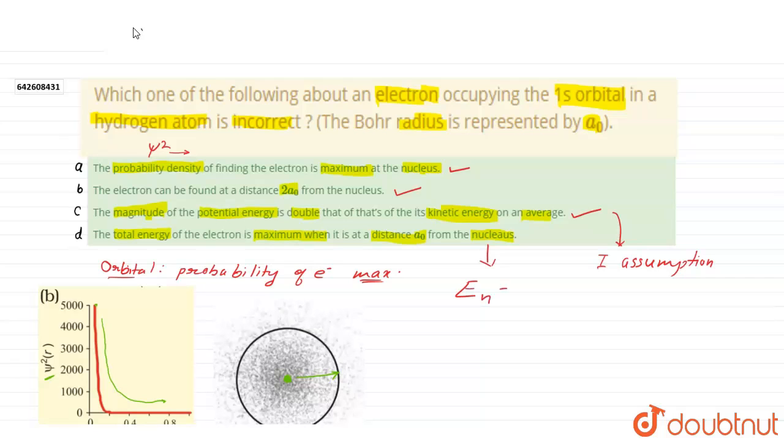En is equal to minus ze square upon r square. Okay guys, if I take here, if I take here, minus ze square upon A0, and if I take A2 here, minus ze square upon 2A0, which is greater? Guys, E2 is greater.